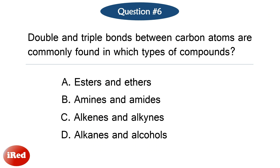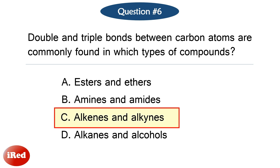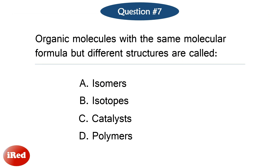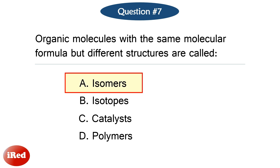Question number 6: Double and triple bonds between carbon atoms are commonly found in which types of compounds? The correct answer is letter C, alkenes and alkynes. The correct answer is letter A, isomers.